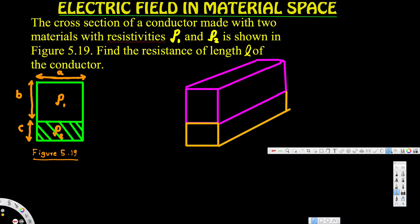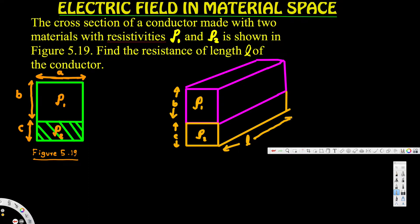This is rho 1 and this is rho 2. This distance is b, this distance is c, and from here to here is l.